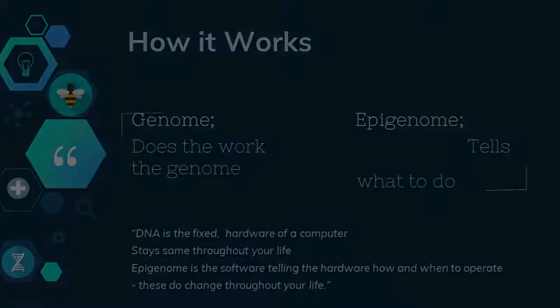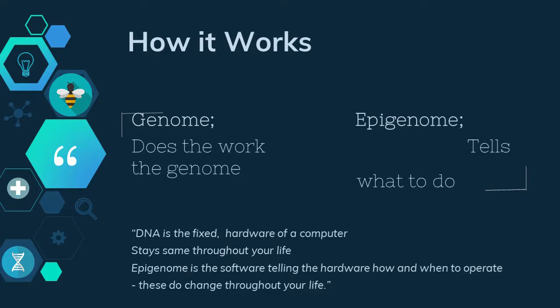You can think of your genome — the DNA — as the workers of the whole system, while the epigenome is the boss telling the workers how and when to operate.